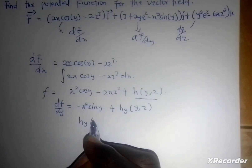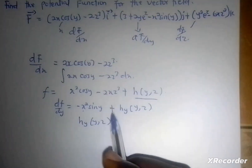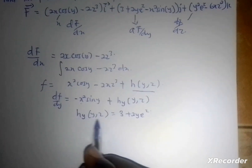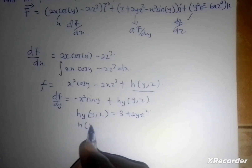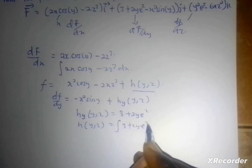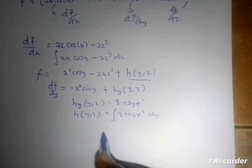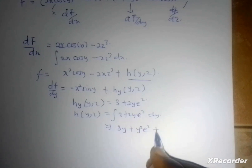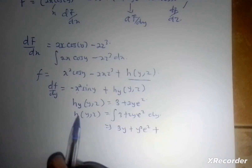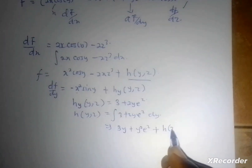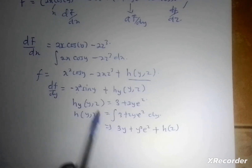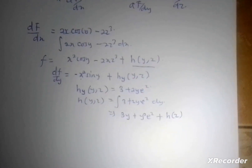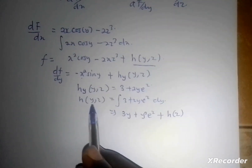Therefore, my h sub y of (y, z) would be equal to the remaining term, which is 3 plus 2y·e^z. This is a partial derivative, so if I want to find my h(y, z), I will integrate this whole function with respect to y. That gives me 3y plus y squared·e^z. But my constant of integration here, since I'm doing the partial derivative with respect to y, will be h(z). This is the most important step: when you integrate the two-variable aspect further, the last part will be a function of the last remaining variable. So I now have h(y, z) = 3y + y²·e^z + h(z).